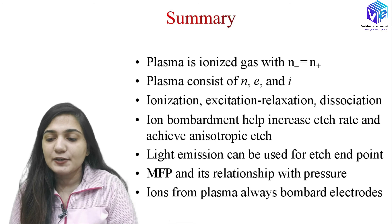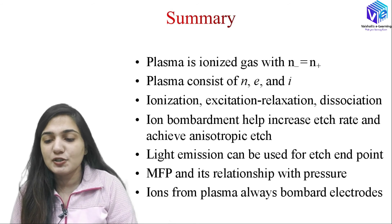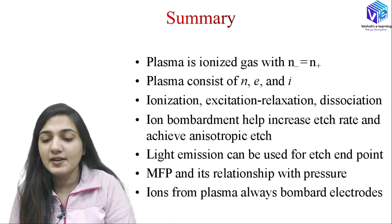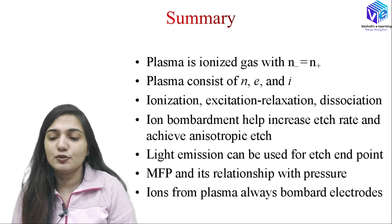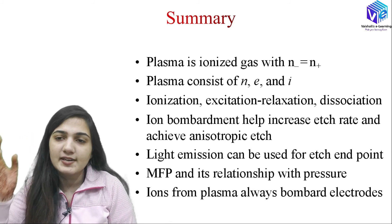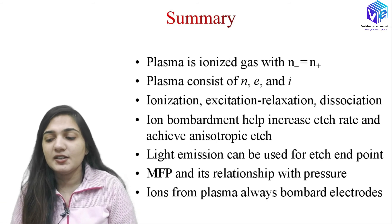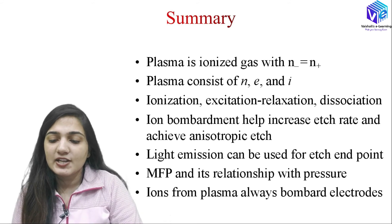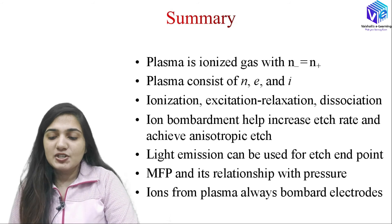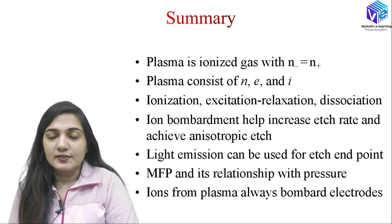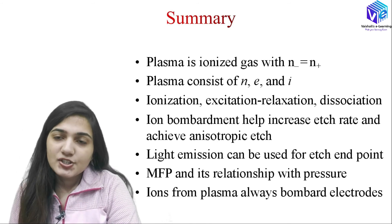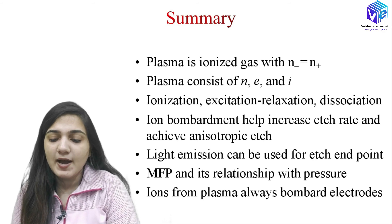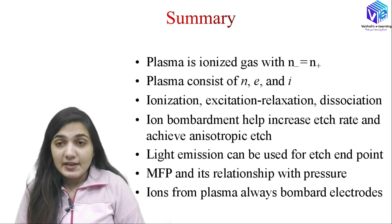Key plasma processes include: ionization — the generation of ions; excitation and relaxation — where electrons move to higher and then lower energy levels; and dissociation — where molecules dissociate into radicals. Ion bombardment helps increase the etch rate and achieve anisotropic etching. Light emission can be used for the etch end point detection — when the material changes, the emitted light changes. Mean free path and its relationship with pressure is crucial for plasma sustenance.